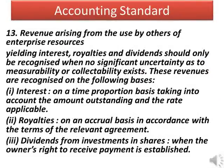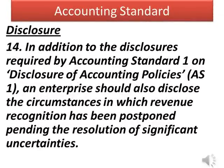Para 13: Revenue arising from the use by others of enterprise resources yielding interest, royalties and dividends should only be recognized when no significant uncertainty as to measurability or collectability exists. These revenues are recognized on the following basis: interest on a time-proportion basis taking into account the amount outstanding and the rate applicable; royalties on an accrual basis in accordance with the terms of the relevant agreement; dividends from investments in shares when the owner's right to receive payment is established. Para 14 — Disclosure: In addition to the disclosures required by Accounting Standard 1 on Disclosure of Accounting Policies, an enterprise should also disclose the circumstances in which revenue recognition has been postponed pending the resolution of significant uncertainties.